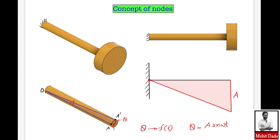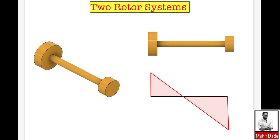At the fixed end, there is no angular deflection — the value of theta is zero — and this point is known as the node. The node is a section within the shaft where the effect of torsional vibrations is zero, meaning the shaft is unaffected by torsional vibration at that point. For the two-rotor system, torsional vibrations occur when rotor A and rotor B rotate in opposite directions.